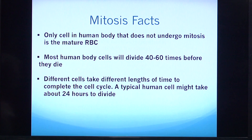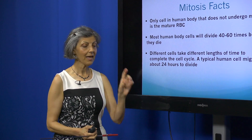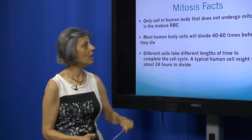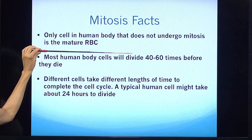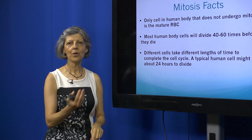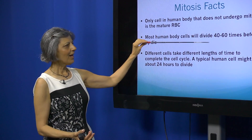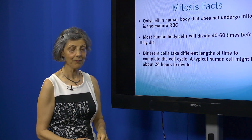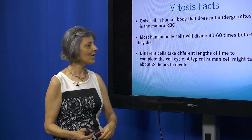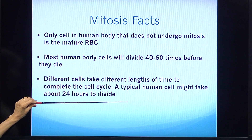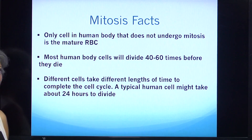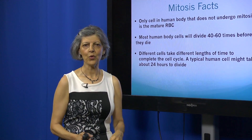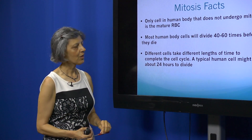A few key facts on mitosis: it occurs in all body cells except reproductive gamete cells. However, the mature red blood cell does not have a nucleus, so mature RBCs cannot undergo mitosis — they age and die, and the bone marrow produces newer cells. Most body cells divide between 40 and 60 times before they eventually die. The average cell cycle takes about 24 hours, though some rapidly dividing cells may have a shorter cycle of around 10 hours.